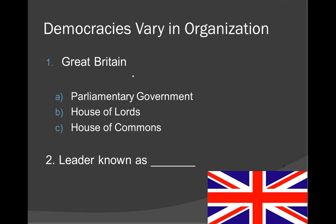Even though Great Britain is a democracy, it is a specific type of monarchy — a constitutional monarchy — in which there is a monarch who rules as more of a figurehead. It is actually a parliamentary government, meaning there is an elected assembly known as Parliament that has both legislative and executive powers. Compare that to our own government: our Congress has legislative powers and our president has executive powers, but in England there is one body, Parliament, that holds both.